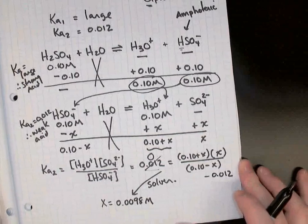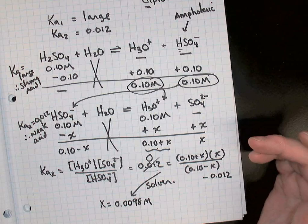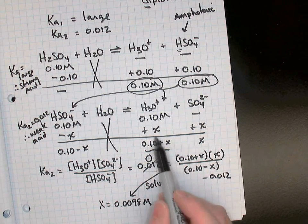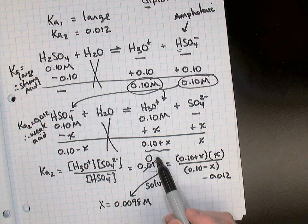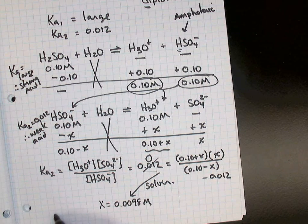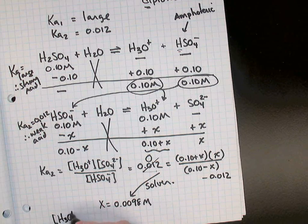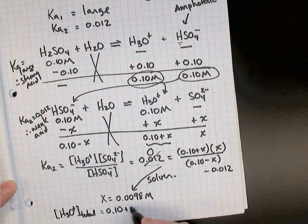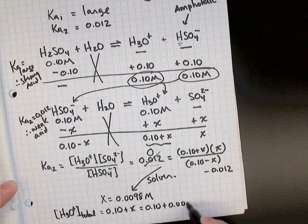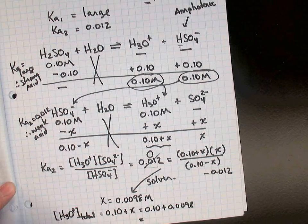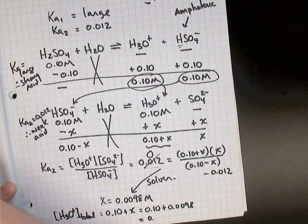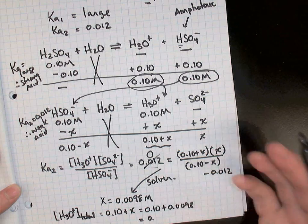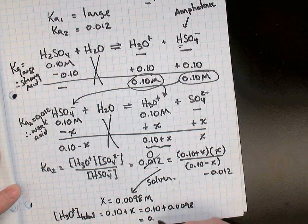Now, the second place where people make mistakes in this question is by reflex, they want to now just go find pH by taking negative log of this, which is what we would normally do in a weak acid problem. However, look at your ice table. Underneath hydronium, we see the total hydronium is not just this number. It was 0.1 plus x. So the total hydronium concentration, looking at the bottom of your ice table, is 0.10 plus x. So that's going to be 0.10 plus 0.0098, which is equal to 0.1098, which rounded off to two figs, 0.11 is what I'll say is the concentration.